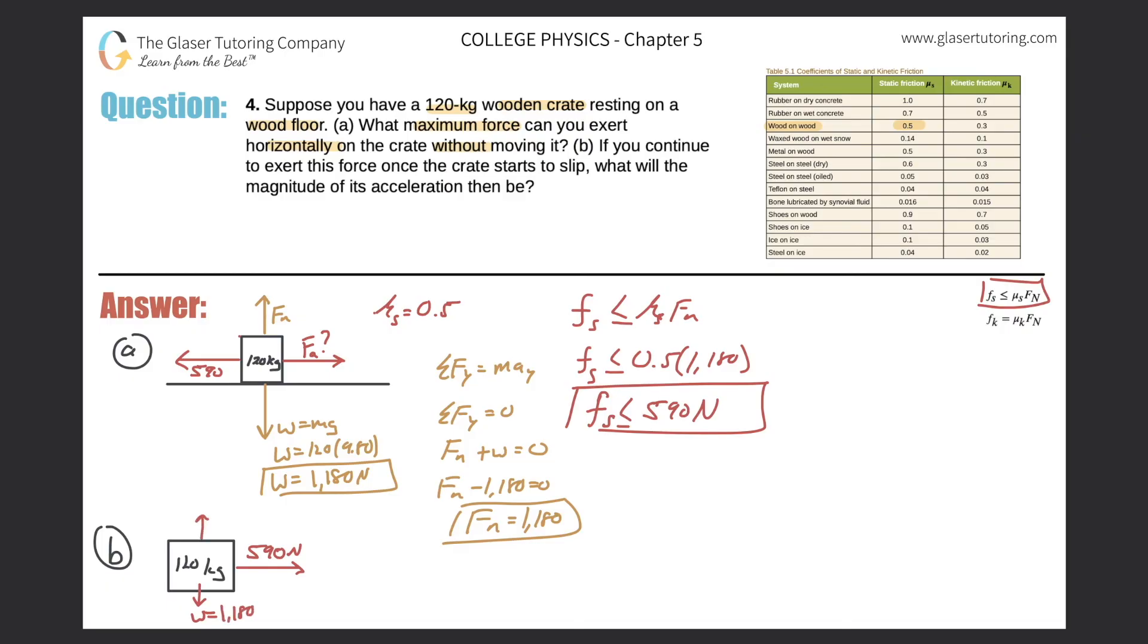The normal force didn't change either. It's still 1180 since there is no acceleration in the y direction. That's the normal force. And now it asks, though, if we continue to exert this force, but it's moving now, meaning once it starts to slip, what will the magnitude be? So we have to think about, well, what friction are we dealing with? Are we dealing with static friction? Or are we now dealing with kinetic friction, meaning friction of motion?